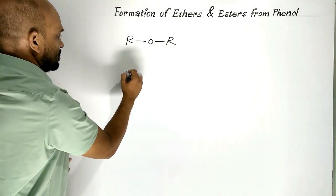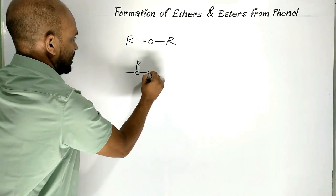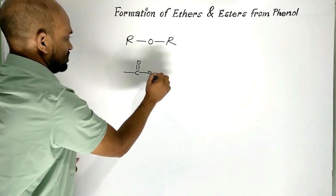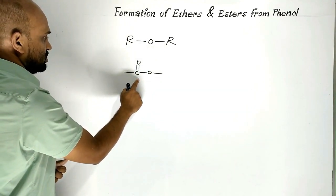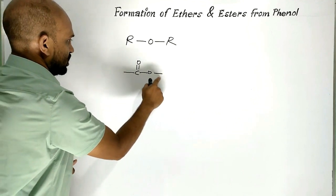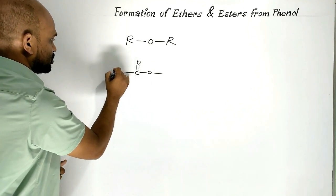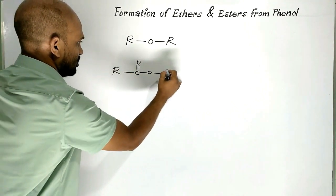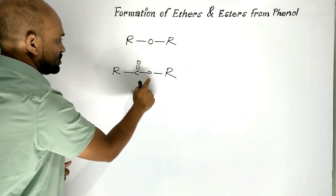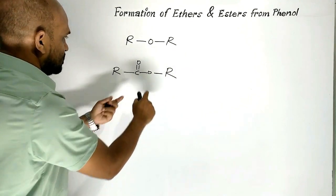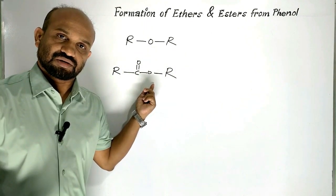Divalent ester group — when these two hands are satisfied with alkyl groups or aryl groups, then it will be the general formulae of esters.